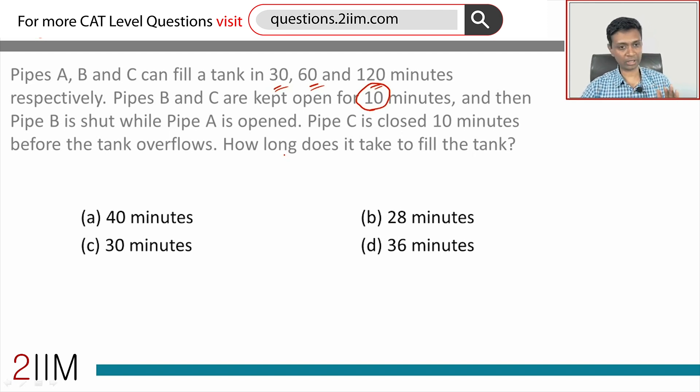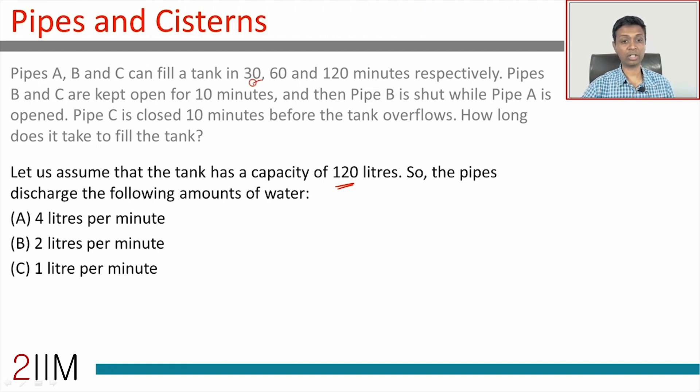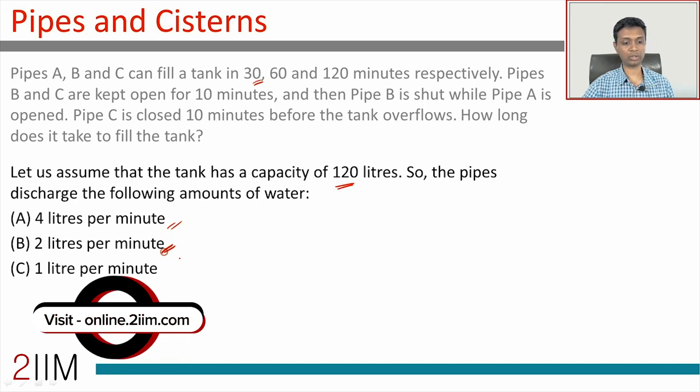Go ahead and make a simple assumption. Let us assume the tank has a capacity of 120 liters. Now pipe A can fill this in 30 minutes, or pipe A fills at the rate of 4 liters per minute. Pipe B can fill this in 60 minutes, or pipe B fills at the rate of 2 liters per minute. Pipe C fills at the rate of 1 liter per minute.